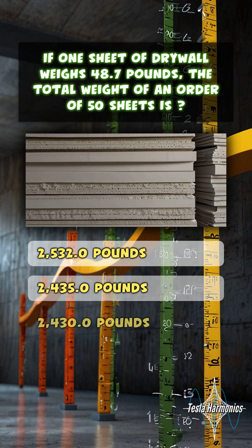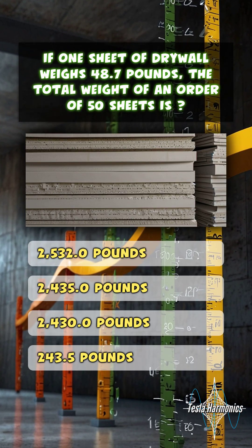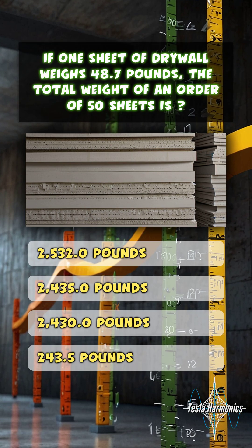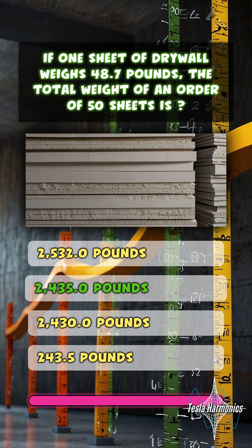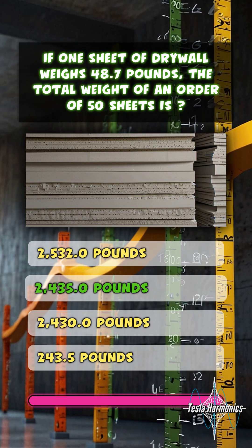If one sheet of drywall weighs 48.7 pounds, the total weight of an order of 50 sheets is 2,435.0 pounds.